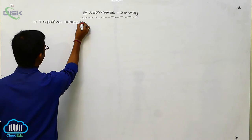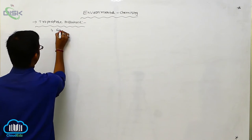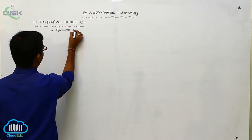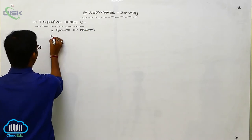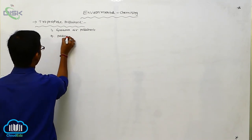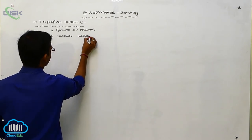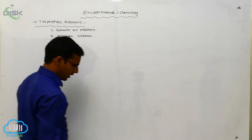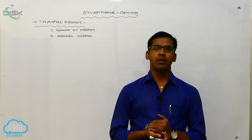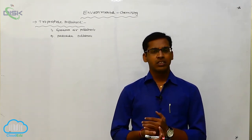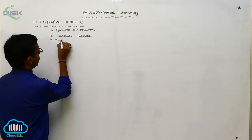There are two types of troposphere pollutants. The first one is gaseous air pollutants — such as oxides of sulfur, oxides of nitrogen, oxides of carbon, and hydrocarbons. The second type is particulate pollutants.